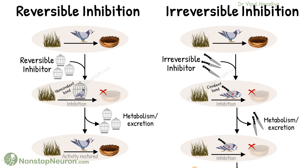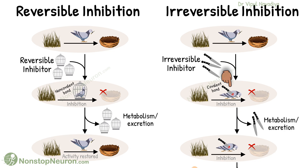Now let's see irreversible inhibition. An irreversible inhibitor binds with the enzyme covalently, and that's the main difference compared to reversible inhibition. In reversible inhibition the bond is non-covalent, whereas in irreversible inhibition the bond is a strong covalent bond.